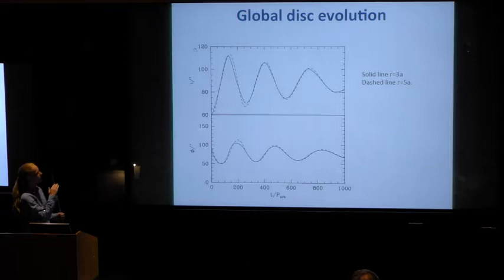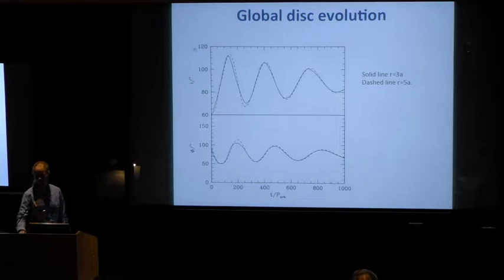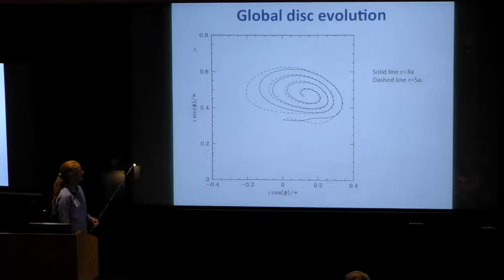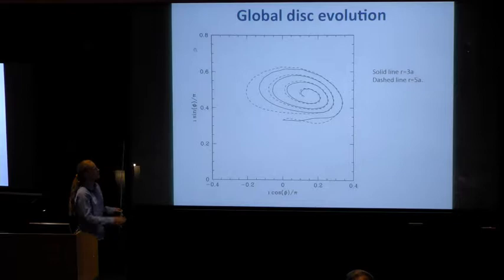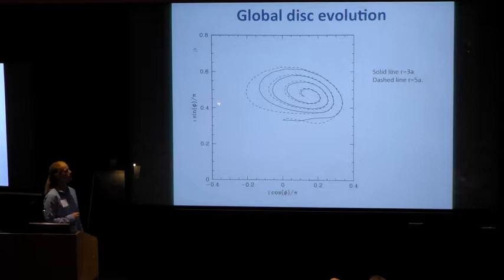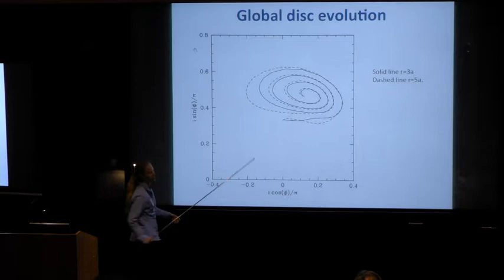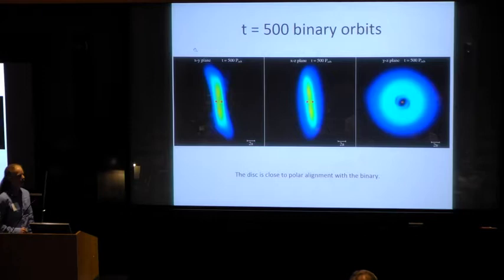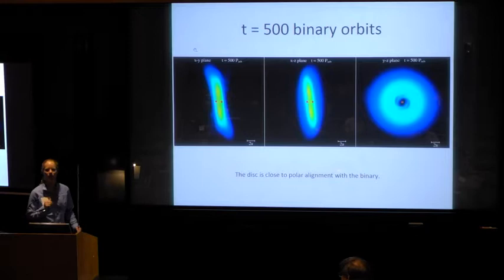Another difference from the test particle case is that the oscillations are damped — the magnitude of the oscillations is decaying — and the inclination is converging on roughly 90 degrees. So the disk is moving towards polar alignment. The phase diagram for the same simulation shows the magnitude of the oscillations decaying and converging on the eccentricity vector. The reason it isn't at φ = 90 degrees, as in the test particle case, is that the disk has some mass — 0.001 that of the binary — which caused the eccentricity vector of the binary to precess. After 500 binary orbits, the disk has become very close to polar aligned to the binary.